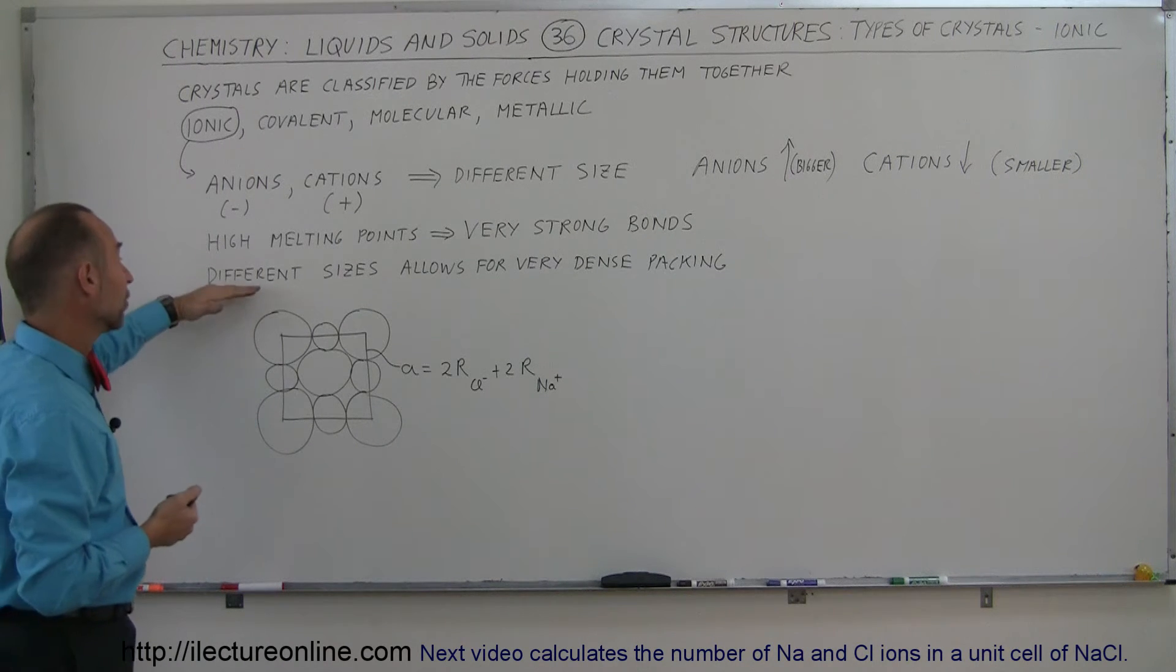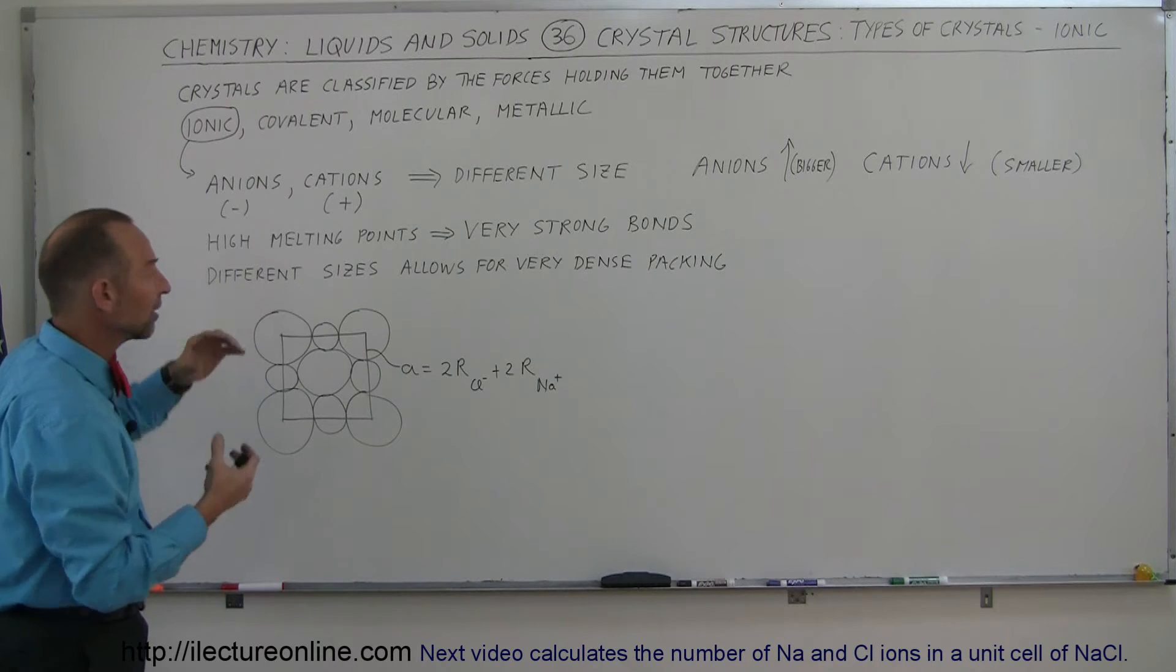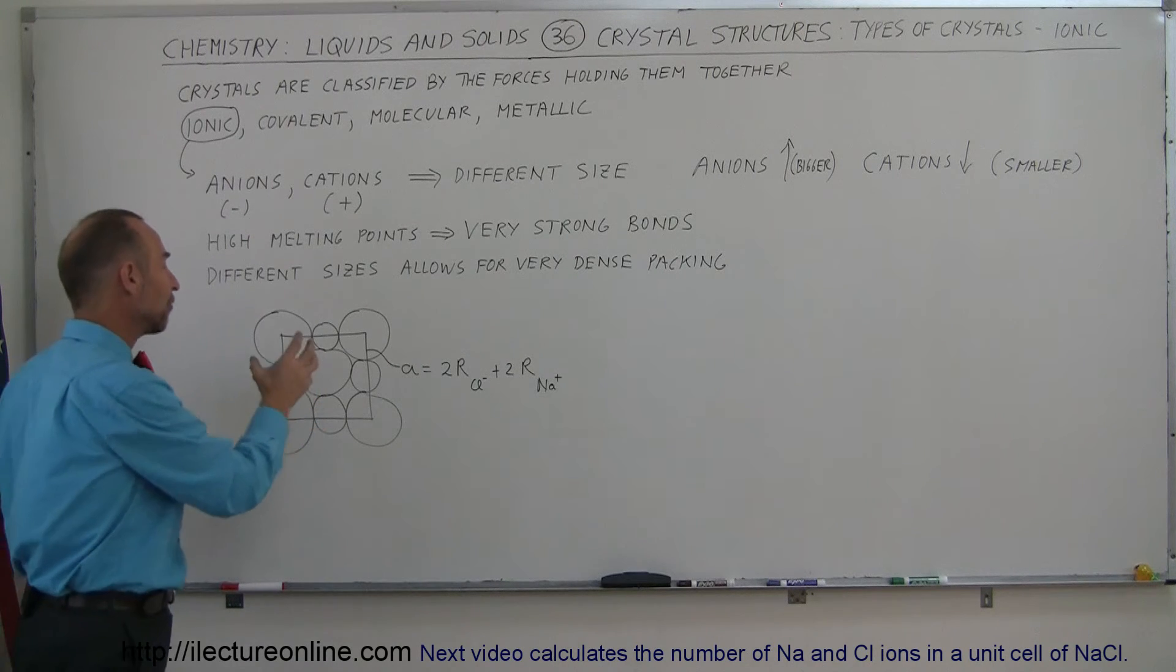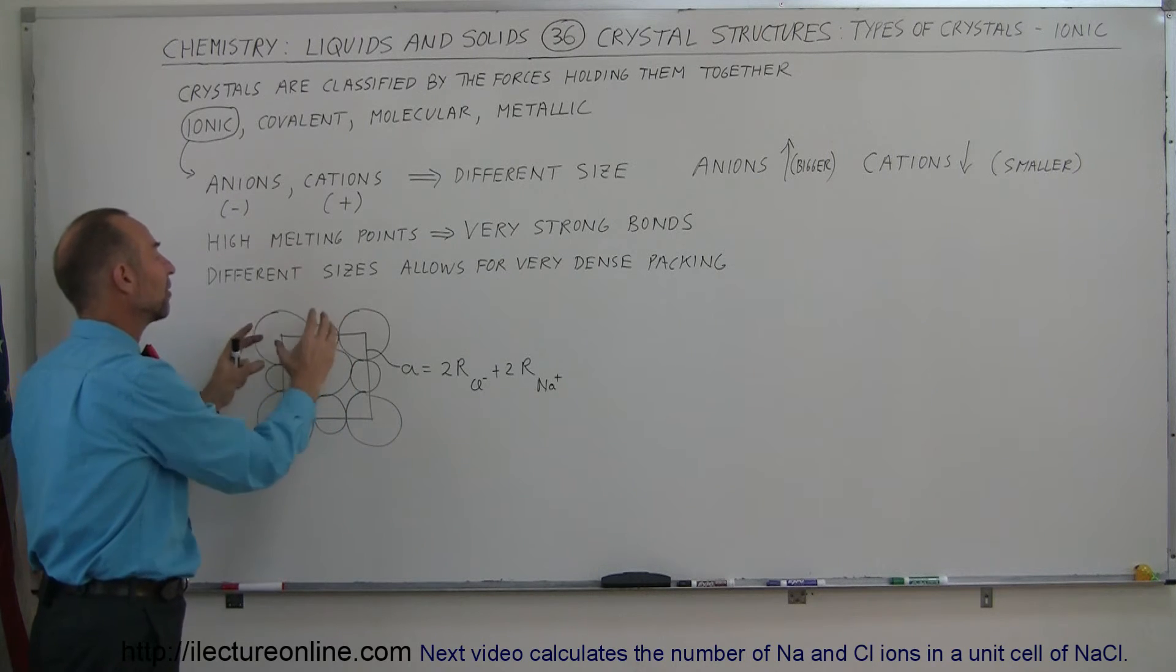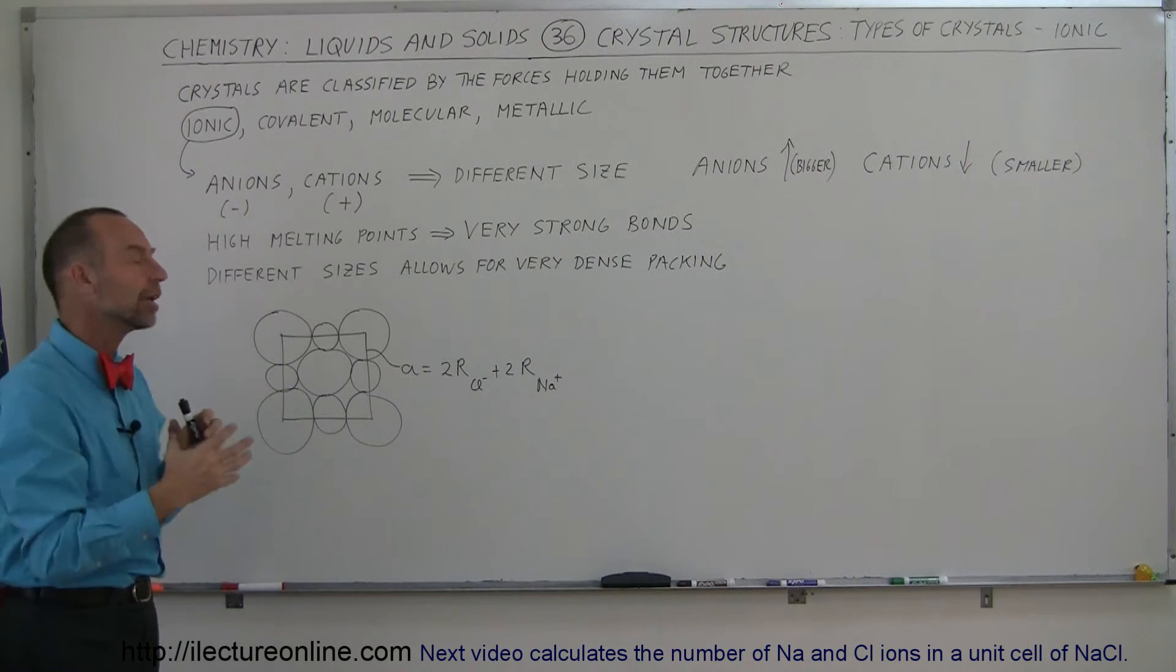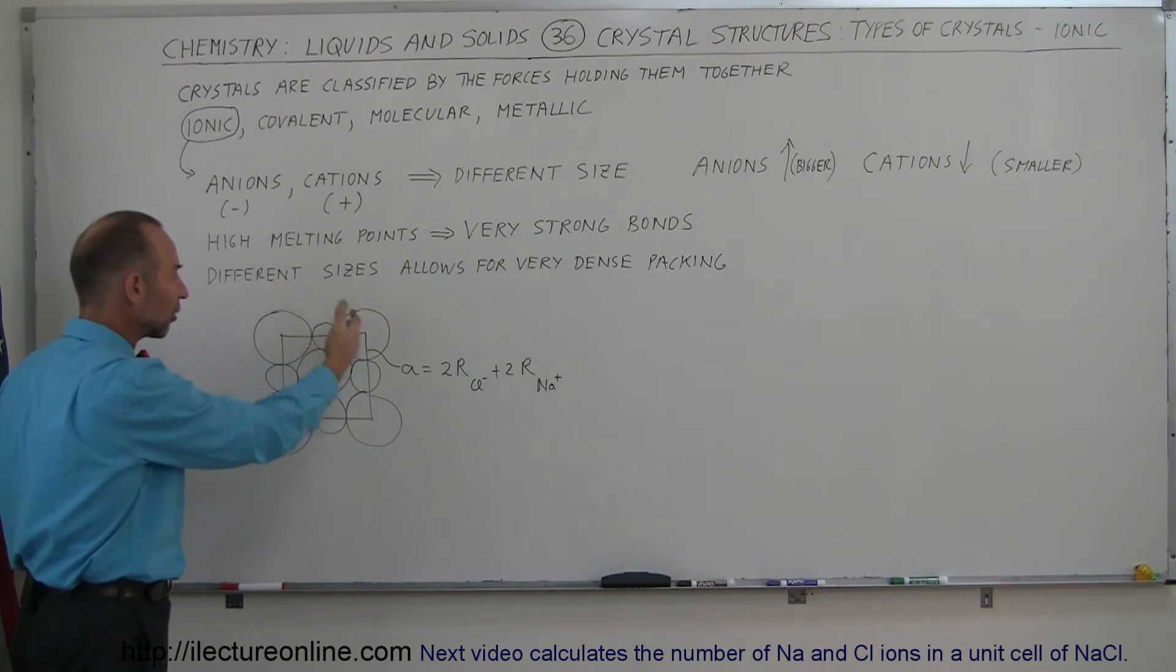Another advantage is that because of the difference in sizes, they can pack very densely together. So the smaller positive ions can fit into the spaces left over by the big ions, and so you have typically a structure that looks like this, which is of course sodium chloride.